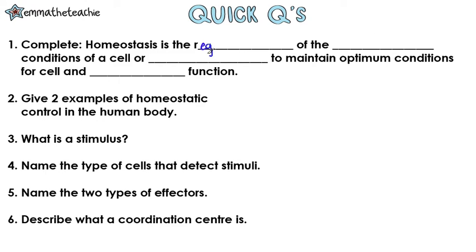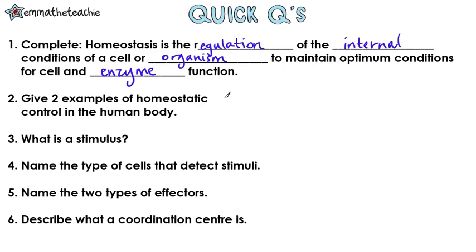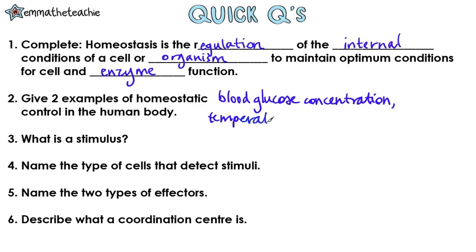Alright, so let's go through the answers. Homeostasis is the regulation of the internal conditions of a cell or organism to maintain optimum conditions for cell and enzyme function. Two examples of homeostatic control are blood glucose concentration, temperature, and water levels.